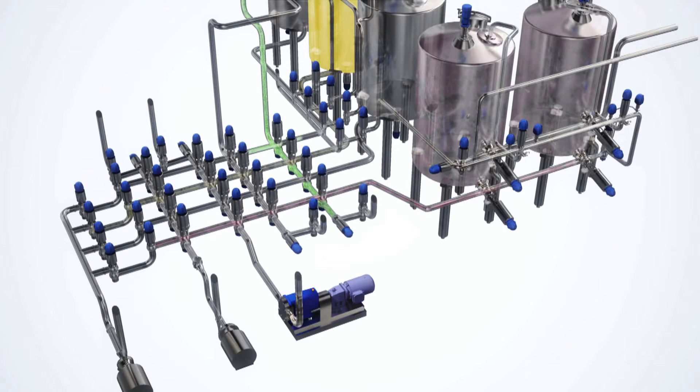The matrix can be designed with the exact number of lines and rows to match the specific requirements of the process. Multiple products from various sources can run to multiple destinations while other lines and tanks are being cleaned.